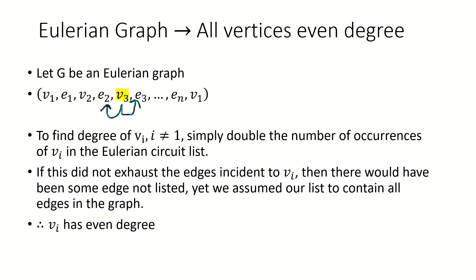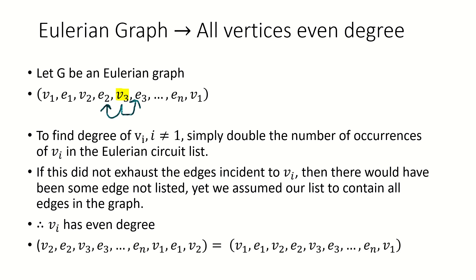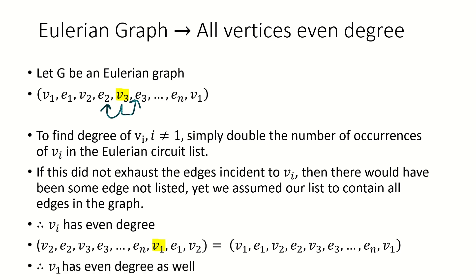All that's left is to show that the initial vertex has even degree. One way to see this is to start the list at a different vertex — as it is a circuit, shifting everything one step preserves the circuit. Once we do this, we can treat our formerly initial vertex as just another intermediate vertex in the list, meaning it must have even degree too. So all vertices in an Eulerian graph must have even degree.